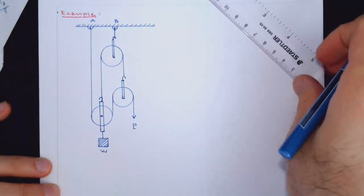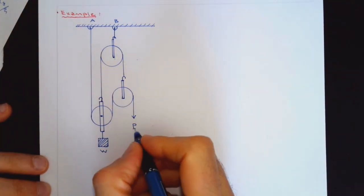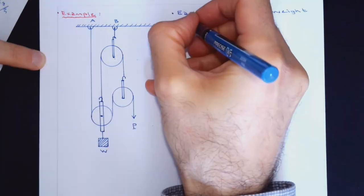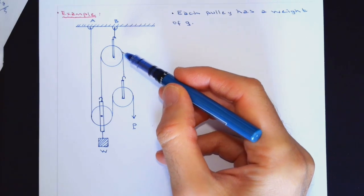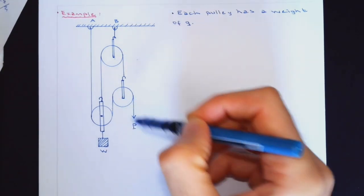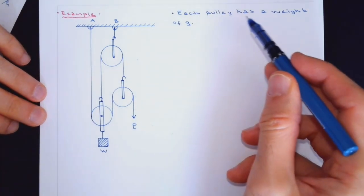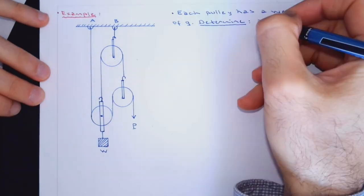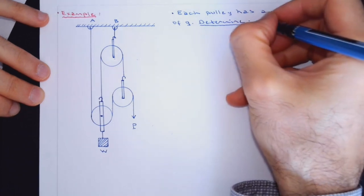You can see we have three pulleys with the cable system. The purpose is to lift a weight. As you can imagine, if you pull this cable, the weight will go up. Each pulley has a weight of Q. Pulleys are usually very light as compared to the weight that we are lifting or the force that we are applying. So in general, you will see in many questions the weight of the pulley is neglected. But I want to show you how we would incorporate it. Determine tension forces in each cable and support reactions.